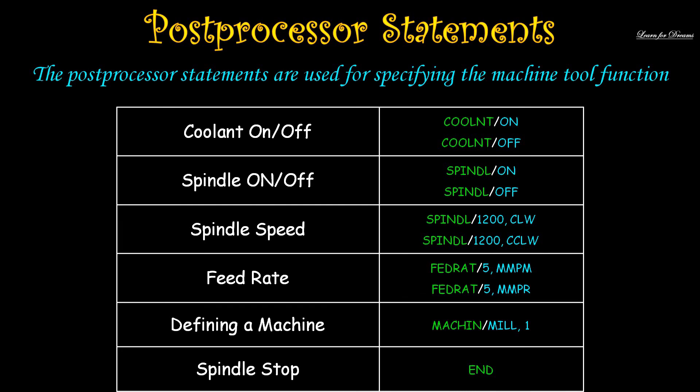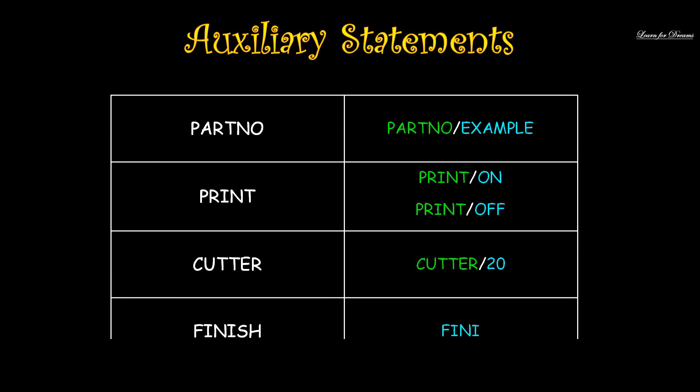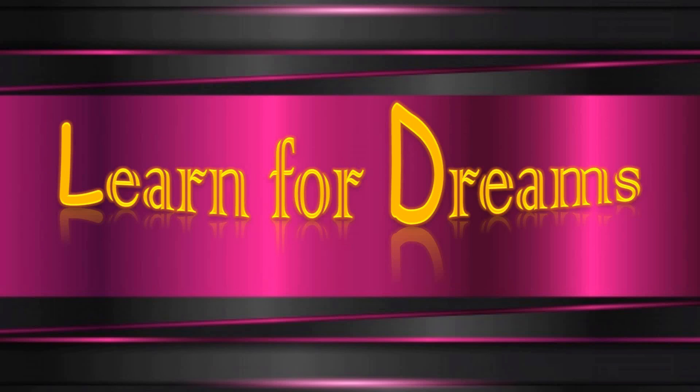Then the last type is auxiliary statements. Auxiliary statements are used to prepare the computer for accepting the part program. It improves the readability of the part program and also controls the output of the computer. These are the examples.